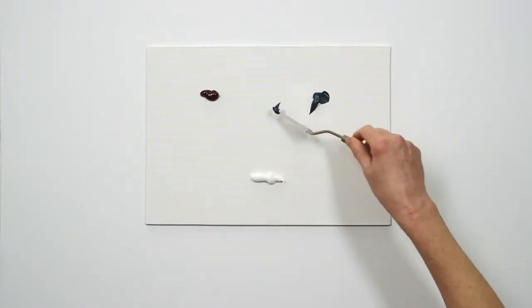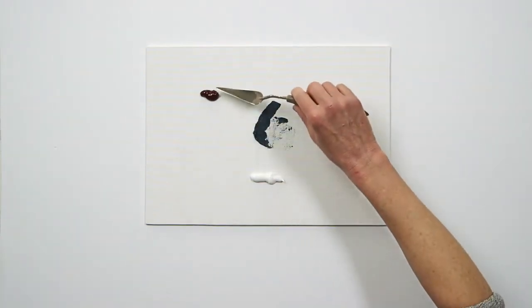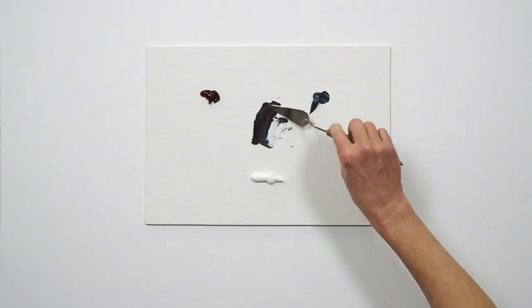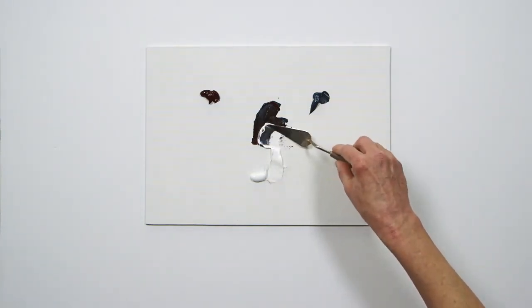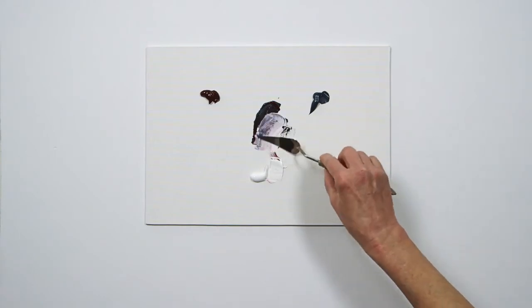If I need a cooler grey, I could use viridian, which is a bluish green, and mix it with a cool complementary red, such as permanent alizarin. Alizarin leans toward the blue side of the colour wheel. I'll add some white, and you can see that the resulting grey has a cool bluish hue, rather than a yellow or orange one.